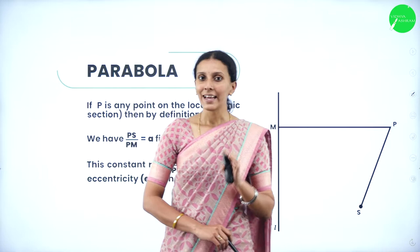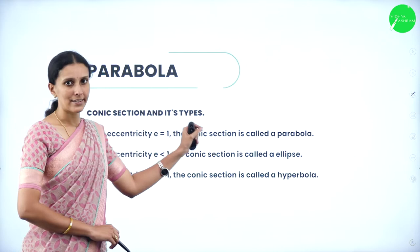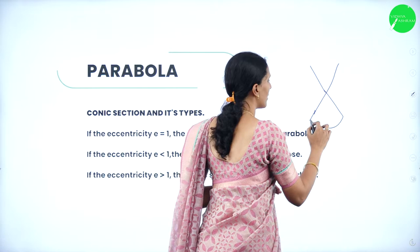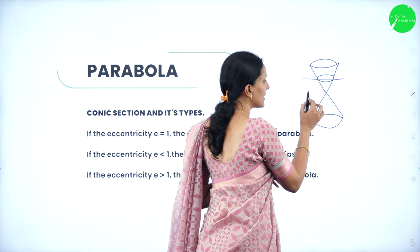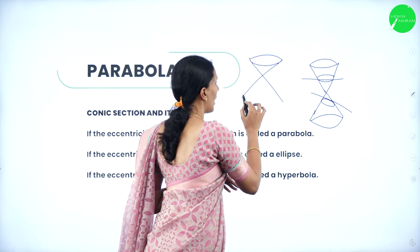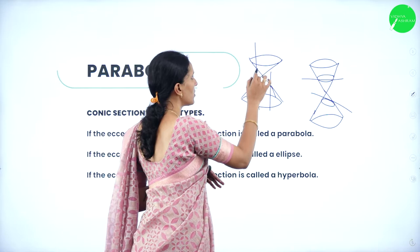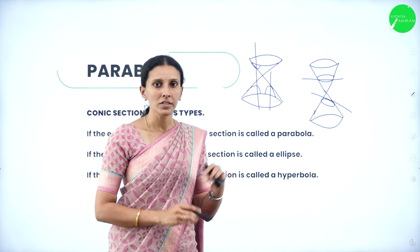Usually we get all these sections from a cone. Conic sections are generated from two cones placed reverse to each other. When a plane is inserted inside a cone, you can see a circle is formed. If inserted at an angle, you get an ellipse. Similarly, you can get a parabola, and if you cut two cones, you get a hyperbola.